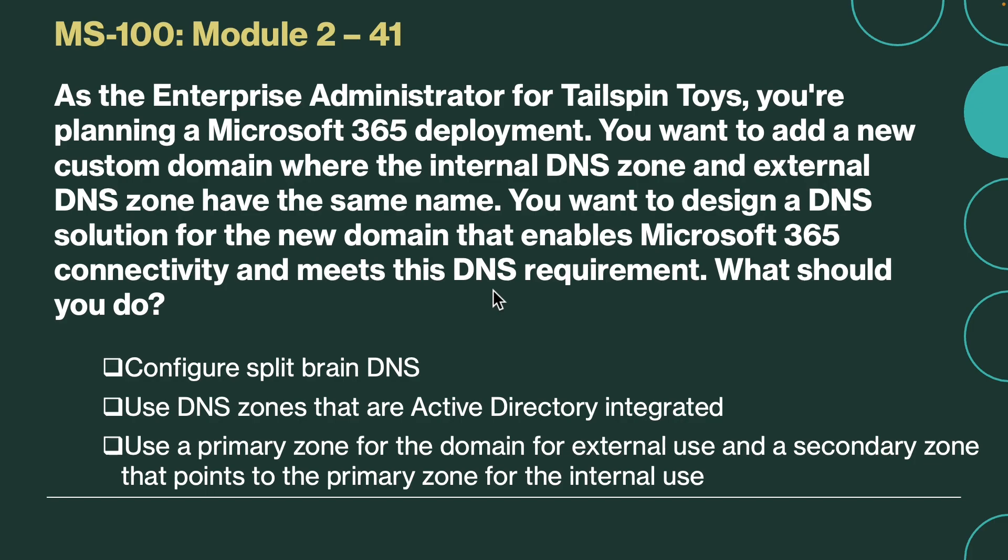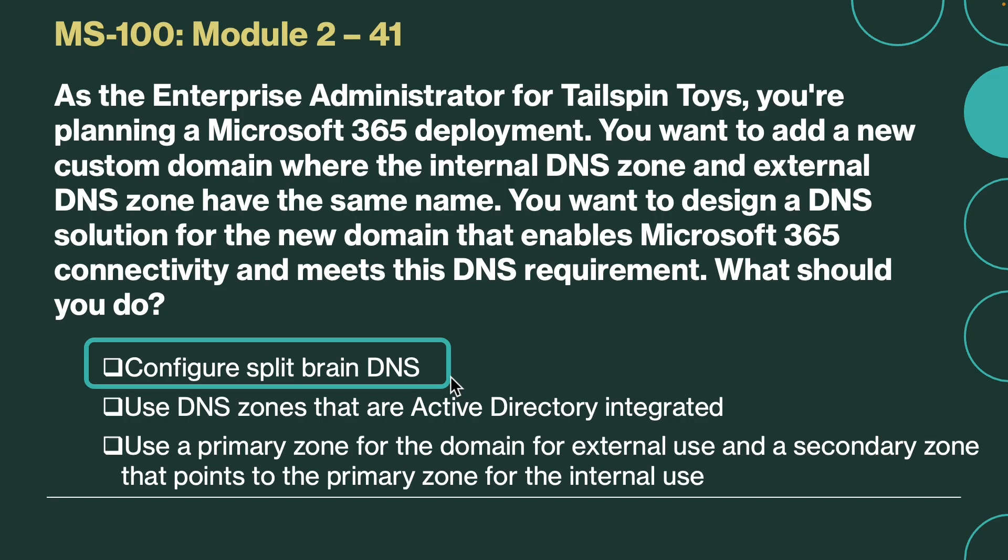Next question. As the enterprise administrator for Tailspin Toys, you are planning a Microsoft 365 deployment. You want to add a new custom domain where the internal DNS zone and external DNS zone have the same name, and you want to design a DNS solution for the new domain that enables Microsoft 365 connectivity and meets this DNS requirement. What should you do? The correct answer is configure Split Brain DNS. Split Brain DNS is a configuration in which the internal and external DNS environments provide different IP addresses for requests to the same host name, depending on which server is used for name resolution.